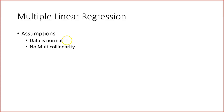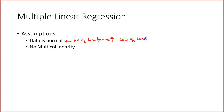As indicated earlier, if the number of data points are more, the data tends to be normal. This is a key point — as the number of data points increases, data tends to be normal. This is known as the law of large numbers. And multicollinearity should not be there.